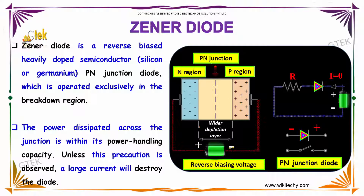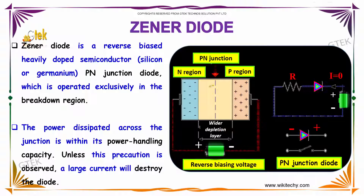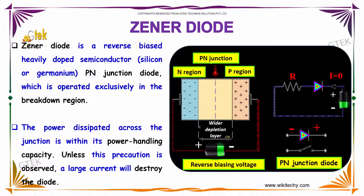The N side is connected to positive and the P side is connected to negative, and it is operated exclusively in the breakdown region. There will be a wider depletion layer. The power dissipated across the junction is within its power handling capacity. Unless precaution is taken, a large current will destroy the diode.